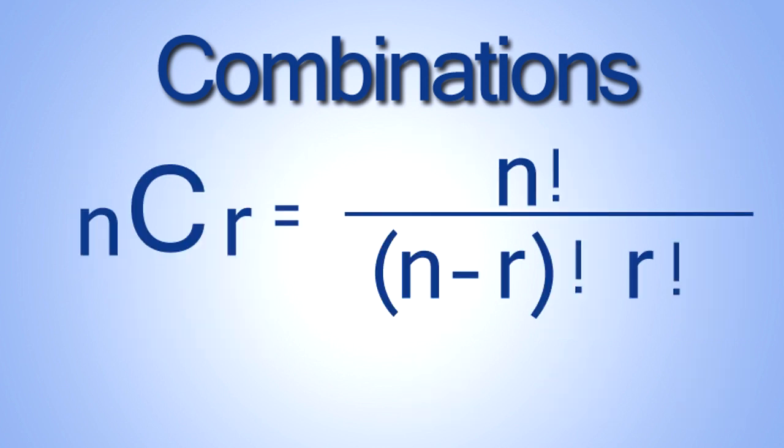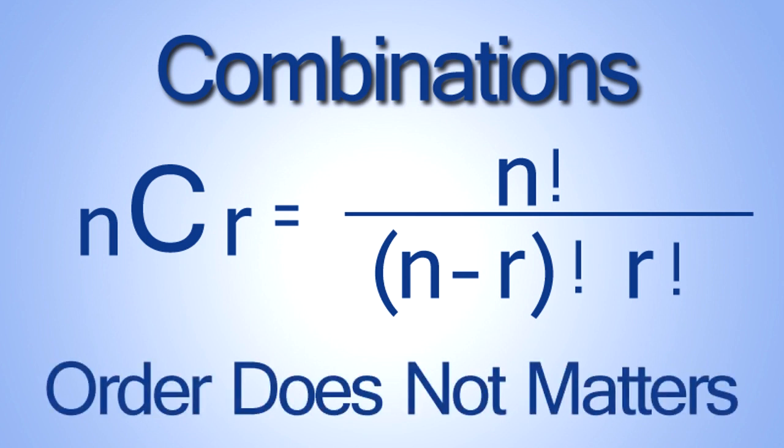Remember, the formula for combinations is n factorial divided by n minus r factorial times r factorial, where n is the total number of objects and r is the number of those objects that you want in a group. Remember, in combinations, order does not matter within the group.